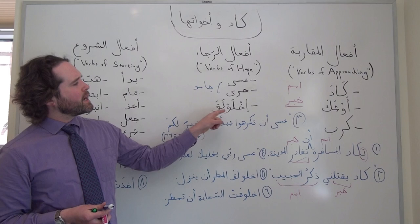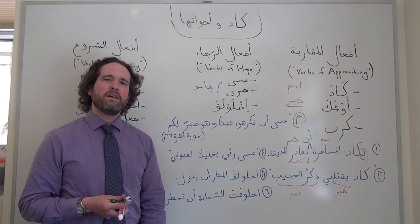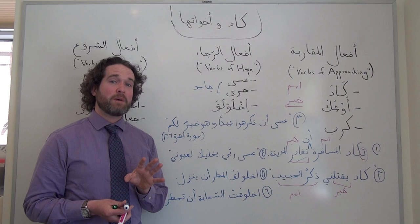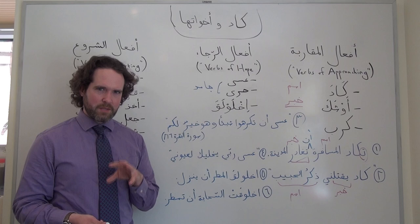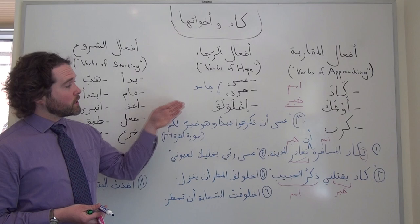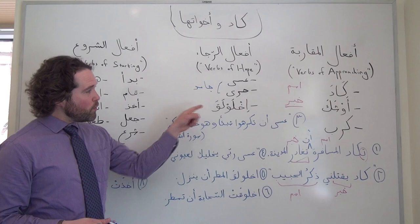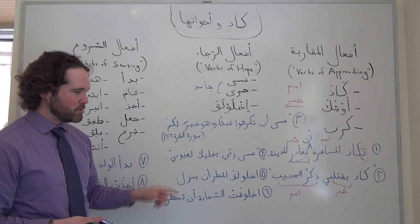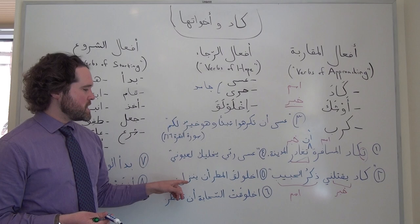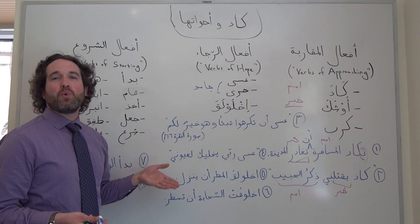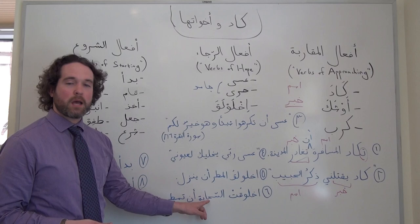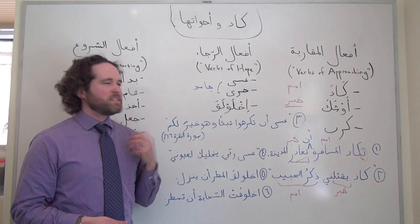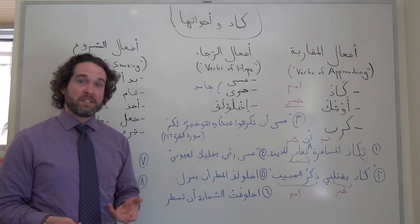إخْلَوْلَقَ is our third فعل رجاء, and it is wonderfully, delightfully strange. It's not a verb you're going to see much in contemporary usage. It's actually a Form 12 verb, which learners of Arabic don't even study unless they're concerning themselves deliberately with certain kinds of old classical texts. But we're including it just in case. Unlike عسى and حرى, إخْلَوْلَقَ is not جامد — it does conjugate for its subject. For example: إخْلَوْلَقَ المطر أن ينزل — hopefully the rain will fall; or إخْلَوْلَقَتْ السَّحَابَةُ أن تَمْتُر — hopefully the cloud will rain down.